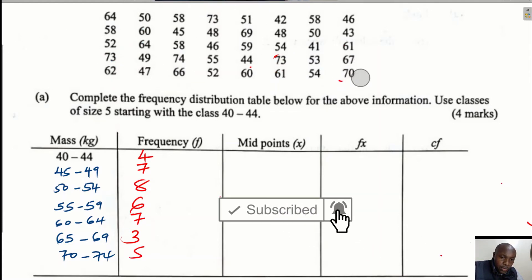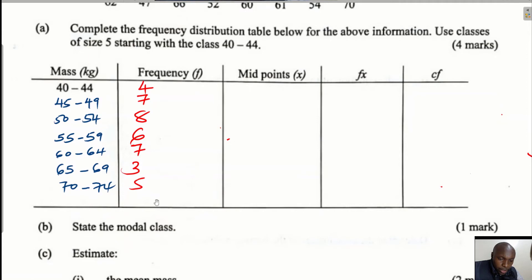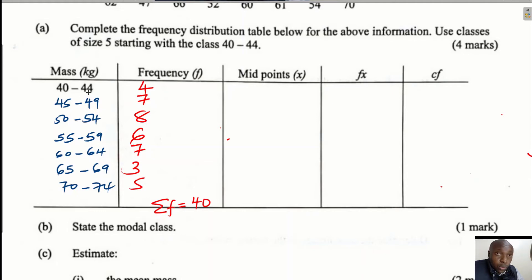We have now counted all the frequencies. To verify, the total frequency — the sum of all frequencies — should equal 40: 4 + 7 + 8 + 6 + 7 + 3 + 5. For the midpoint column, we add the class boundaries and divide by 2. For 40 to 44: 40 + 44 = 84, divided by 2 = 42. For 45 to 49: 45 + 49 = 94, divided by 2 = 47.